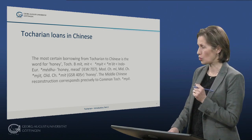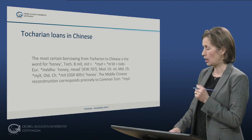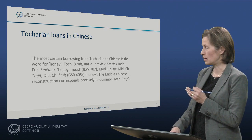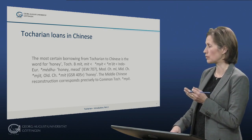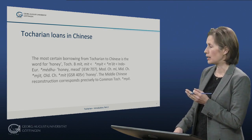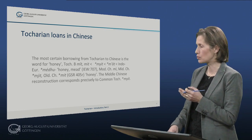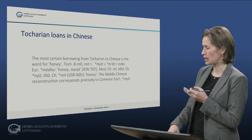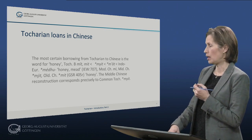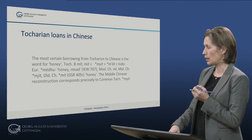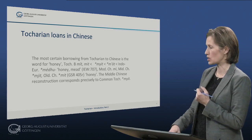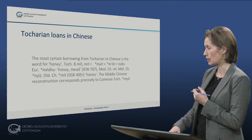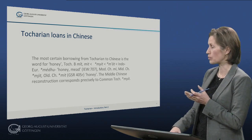The word for honey is the most certain word of this type. It is the well-known Indo-European root 'medho', meaning honey and mead. In Tocharian B it is 'mit', and the Middle Chinese reconstruction is also something like 'mit', Old Chinese 'mit', meaning honey. That is clearly borrowed from Tocharian.